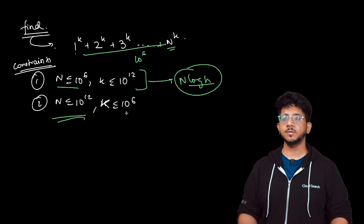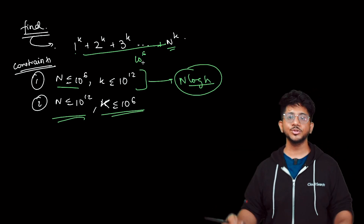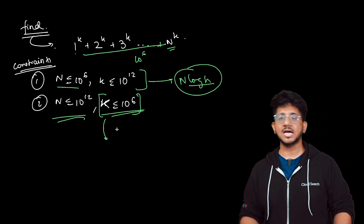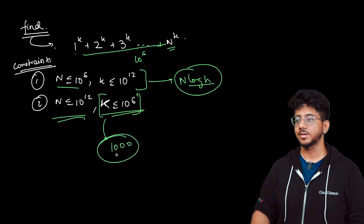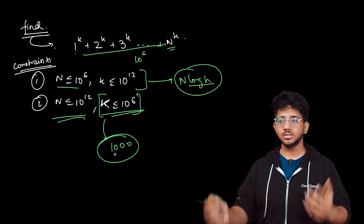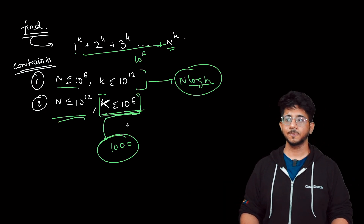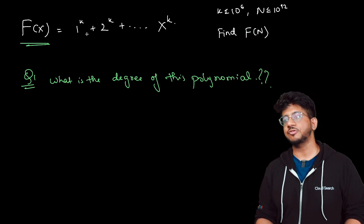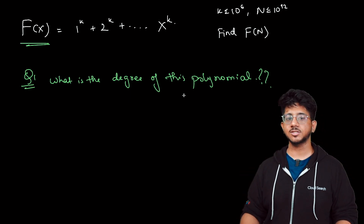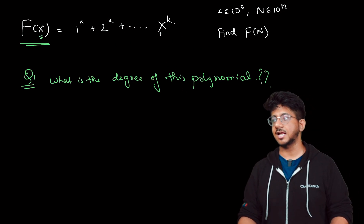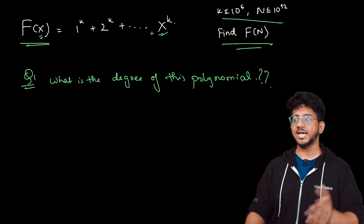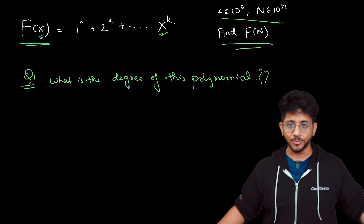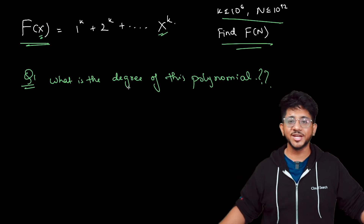But what if the number of terms is up to 10⁶ and the power is small? This is where we start to use Lagrange interpolation. The key idea is the power has to be small — generally powers up to around 100,000. For this specific case you can also solve it for k up to 10⁶. First, write the function you are trying to evaluate: f(x) = 1^k + 2^k + 3^k + ... + x^k, where x is the last term. We need to find f(n). My first question: what is the degree of this polynomial? Pause and think.